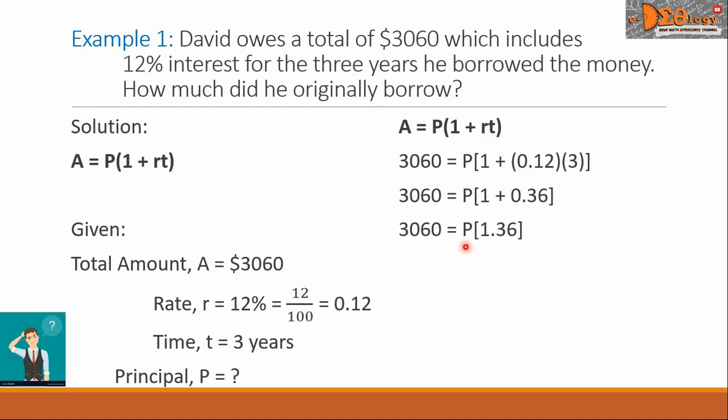We want to find this P, let us divide this equation by the coefficient of P, and that is the 1.36. So, the left side, 3060 divided by 1.36, it is now here.